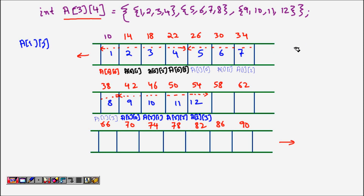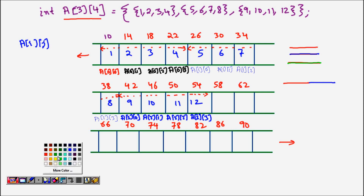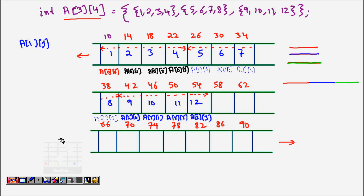So we have a two-dimensional structure, but in memory it is stored linearly. Using different colors: the first row, second row, and third row are laid out one after another in memory. Now, pointers — we are very familiar with them. The base address a[0][0] is the starting point of your two-dimensional array.